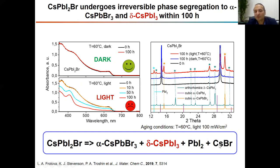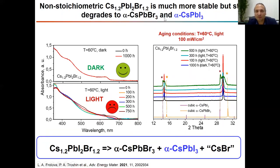We also observed such impurities as lead iodide and cesium bromide. In the case of the non-stoichiometric material, we also observed decomposition under illumination, but the aging time was about 10 times longer. So this material is clearly much more stable compared to the stoichiometric system.